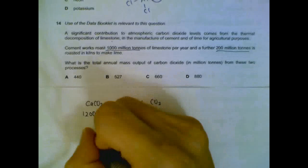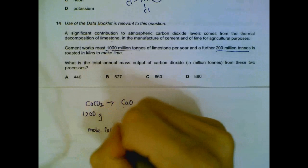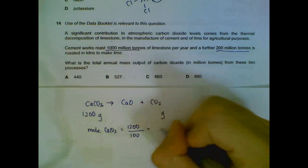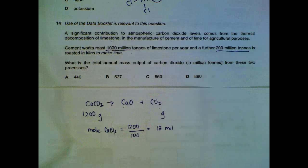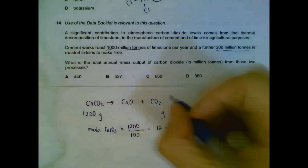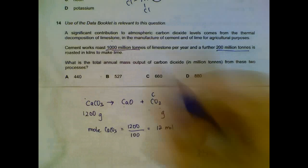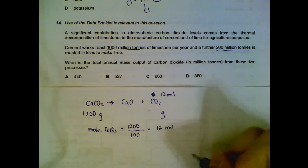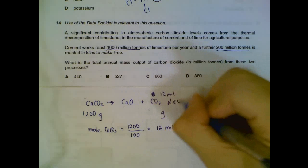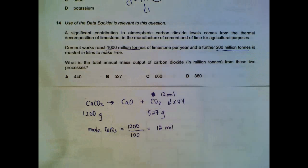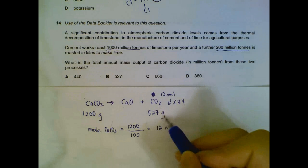We calculate the moles of calcium carbonate by dividing grams by the molar mass. With 1,200 grams, that gives us 12 moles. Since the ratio of calcium carbonate to carbon dioxide is 1:1, we also have 12 moles of CO₂. Multiplying by the molar mass of CO₂ gives 528 grams, which converts back to 528 million tons of carbon dioxide produced.